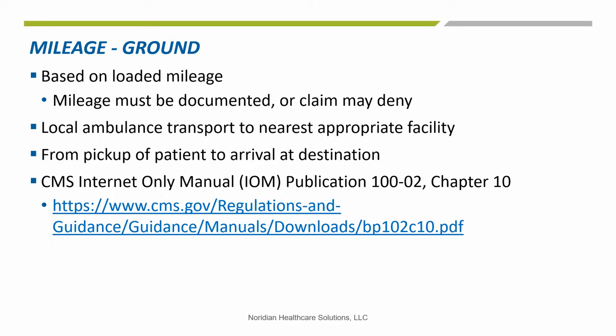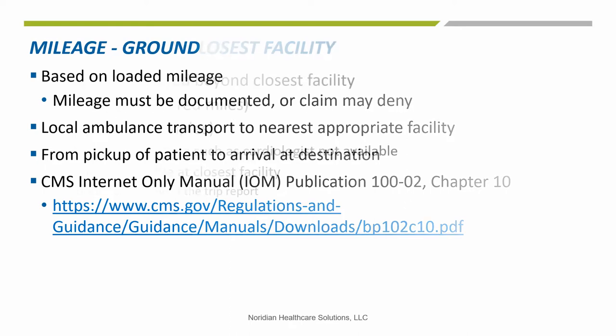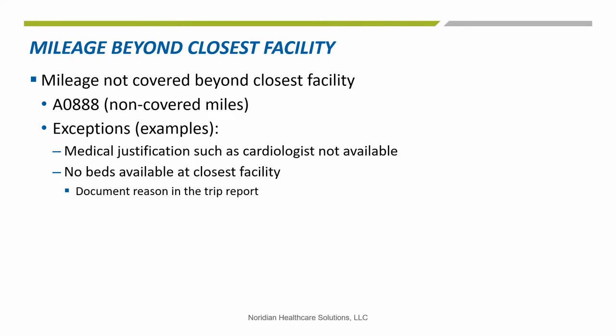For instance, the closest facility is 5 miles away, yet when you contact them they tell you they have no beds available, so you are diverted to another hospital 10 miles away. Note in your documentation the circumstances of this transport in the comments field or item 19 of the 1500 form. The distance to the second facility would be covered because at the time of transport the second facility was the closest one able to treat the patient. Medicare doesn't consider additional mileage beyond the closest facility if there is no medical need or justification — exceptions such as cardiologist not available or no beds available. The mileage code to use is A0888 for those non-covered miles.